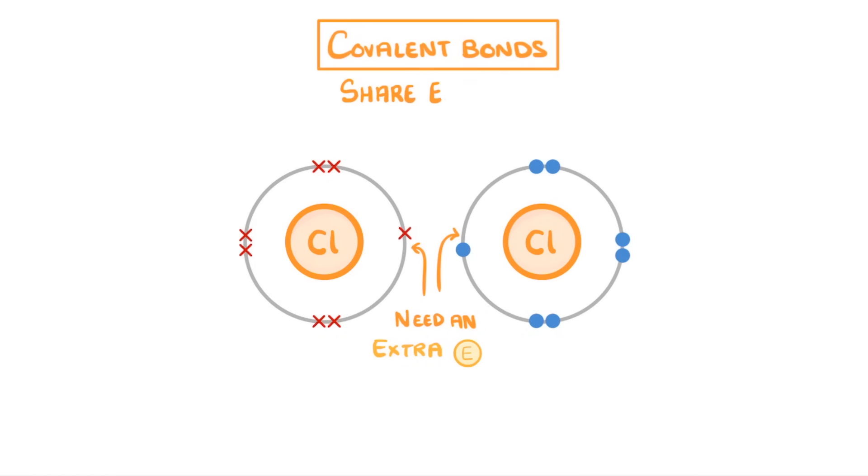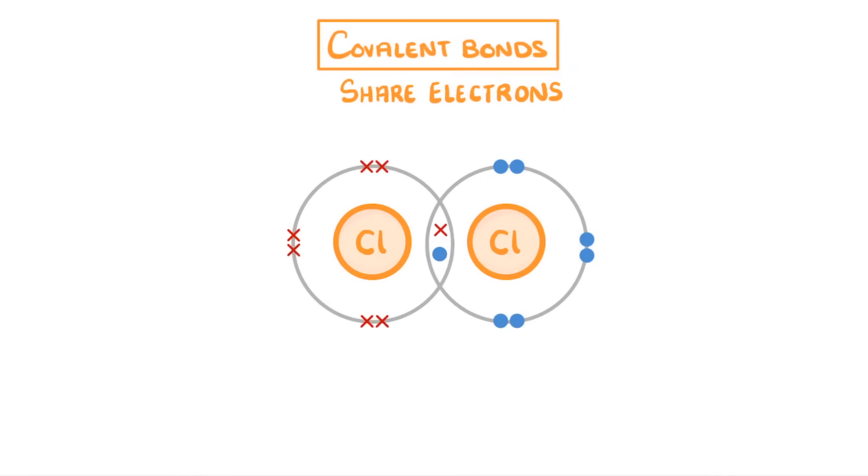Instead what they can do is share some electrons, and as each atom needs one extra electron, they each share one of their own. So that together two are being shared, and they each get one extra.